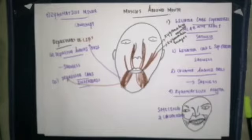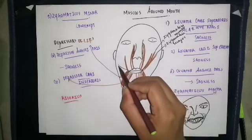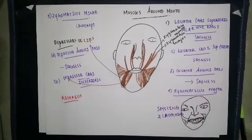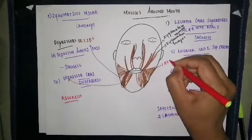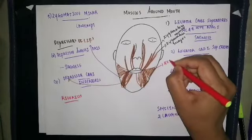Another muscle to discuss is the risorius muscle. It arises from the fascia over the masseter and gets inserted into the skin around the angle of the mouth on both sides. The action of the risorius muscle is to help in making an expression of grinning.